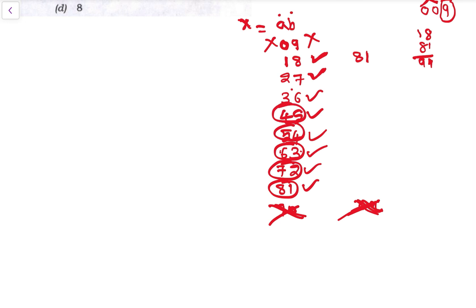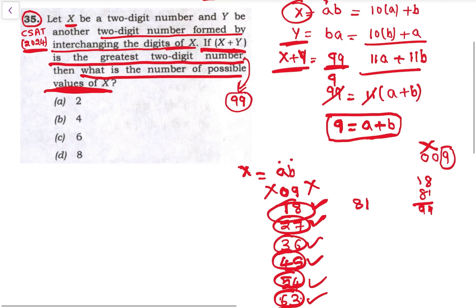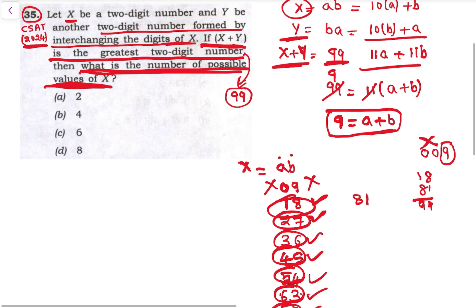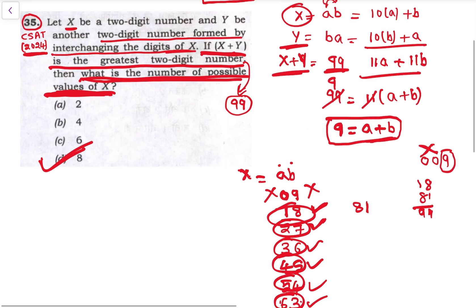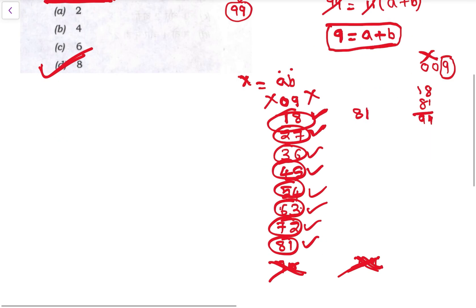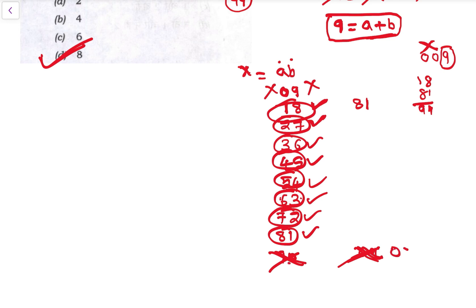So number of possibilities is 1, 2, 3, 4, 5, 6, 7, 8 - so 8 possible values of X. Option D. Possible values of X where reverse will be a two-digit number.